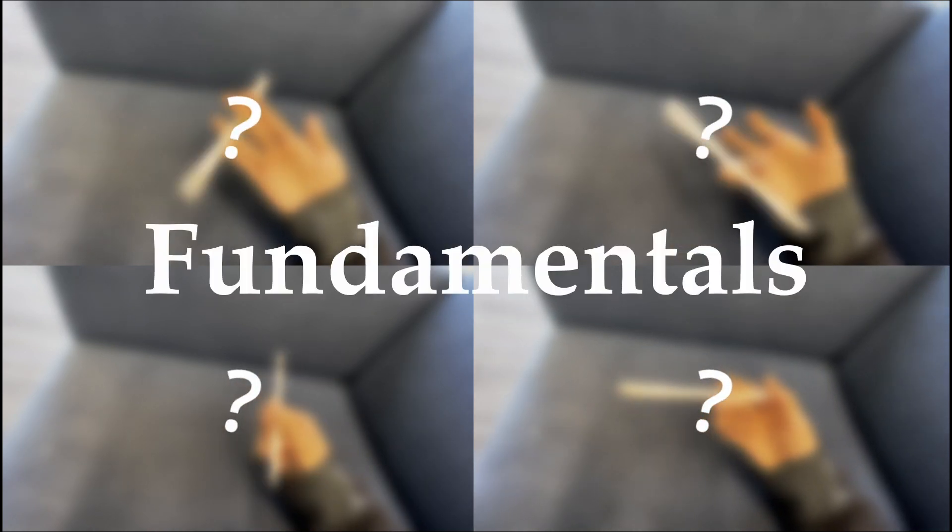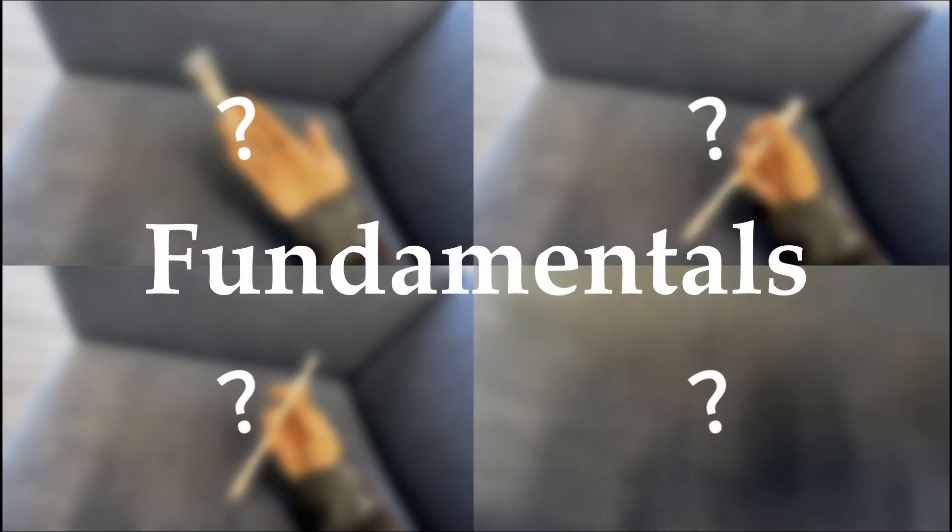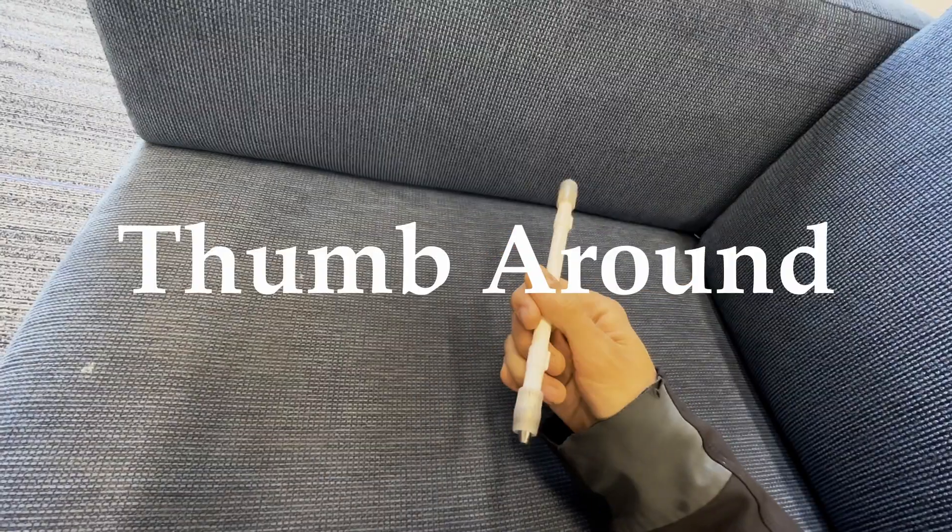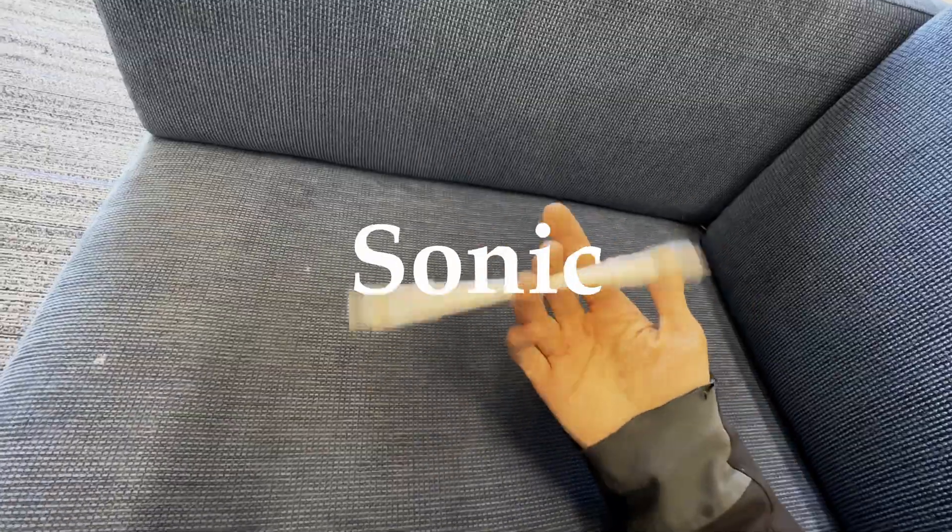Now, there are four main tricks most people learn when starting to learn pen spinning. These are known as the fundamentals, because they're required knowledge for almost every other trick. These four tricks are the thumb round, charge, finger pass, and sonic.